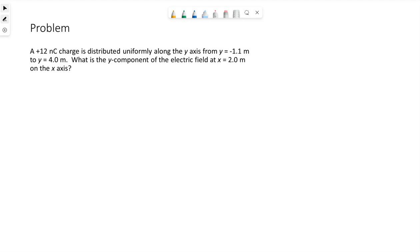We have an example problem here. A positive 12 nanocoulomb charge is distributed uniformly along the y-axis from y equals negative 1.1 meters to y equals 4.0 meters. What is the y-component of the electric field at x equals 2 meters on the x-axis?